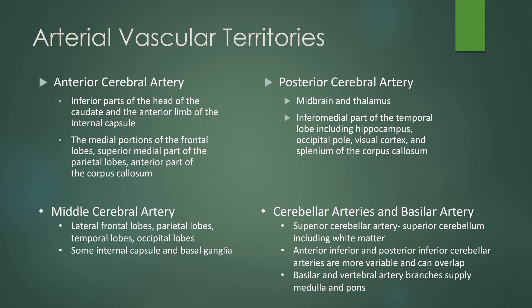To review the arterial vascular territories, the anterior cerebral artery covers the inferior parts of the head of the caudate and the anterior limb of the internal capsule, as well as the medial portions of the frontal lobes, the superior medial part of the parietal lobes, and the anterior part of the corpus callosum.